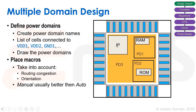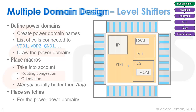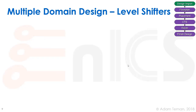We have to account for routing congestion and orientation when placing macros — it's usually best to do this manually rather than automatically. Finally, we have to place power gating switches around our power domains, which may also have retention level shifters.